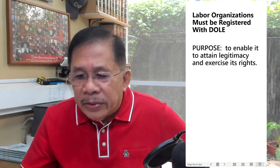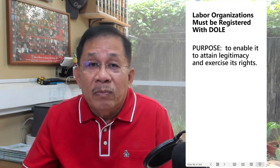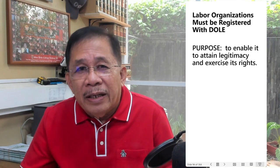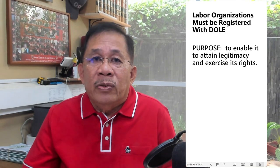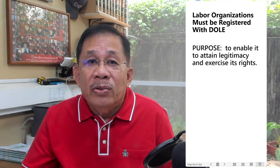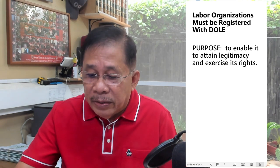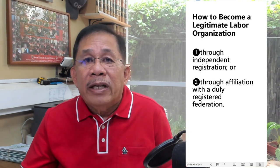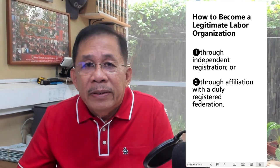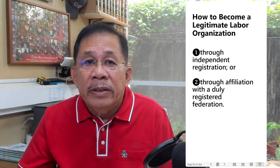Labor organizations must be registered with the Department of Labor to enable them to attain legitimacy and exercise their rights. A legitimate labor organization is a union duly registered with the Department of Labor and includes any branch or local thereof. There are two ways for a labor organization to become legitimate: through independent registration or through affiliation with a duly registered federation.